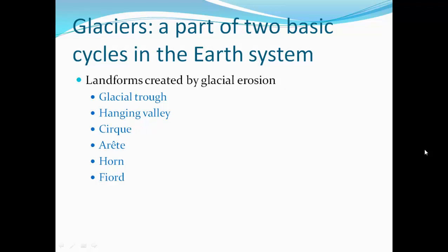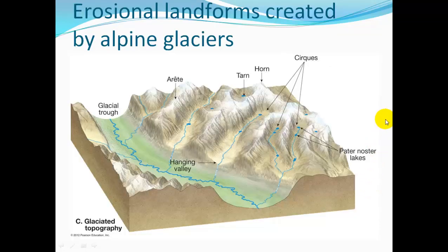Cirques are round areas where glaciers start and carve out a bowl. Arêtes are ridges that form between two glaciers where ridges meet. A horn is a peak formed where a couple of ridges meet. A tarn is a lake that's in a cirque. Here are some cirques — these round bowls carved by glaciers where they start.